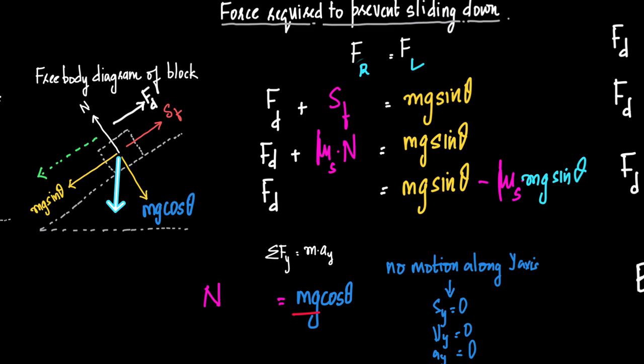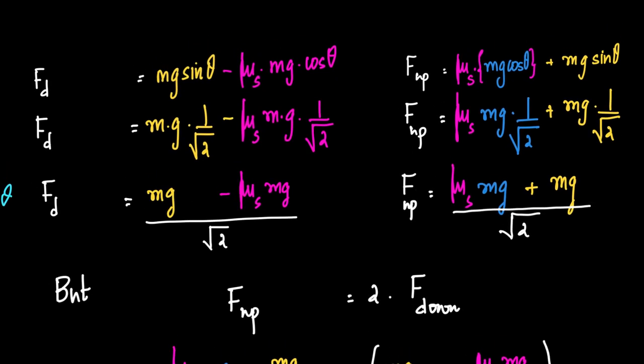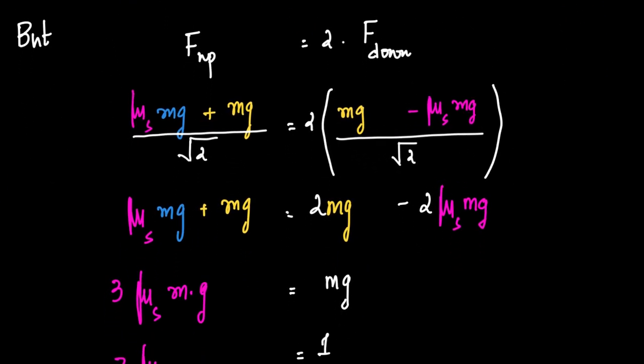Now we have two equations: F_down equals Mg sin θ minus μ_s · Mg cos θ, and F_up equals μ_s · Mg cos θ plus Mg sin θ. Since θ equals 45 degrees, sin θ and cos θ are both equal to 1/√2, so we can factor out Mg/√2 from both equations. Using the condition F_up equals 2 times F_down, this equation equals two times the other.